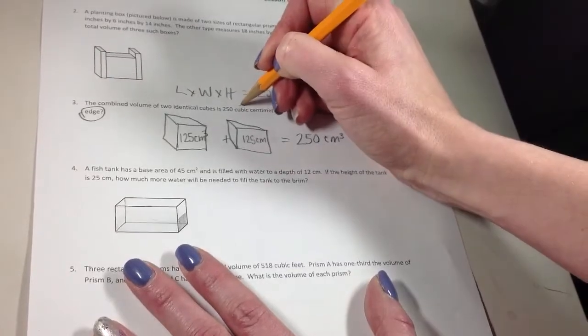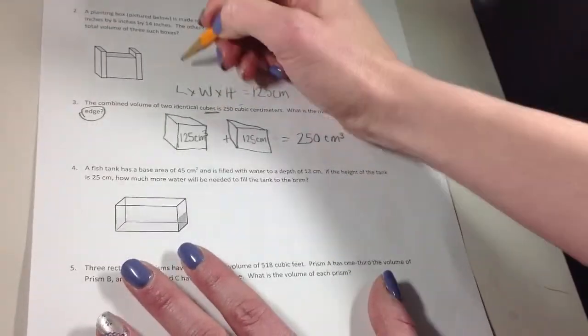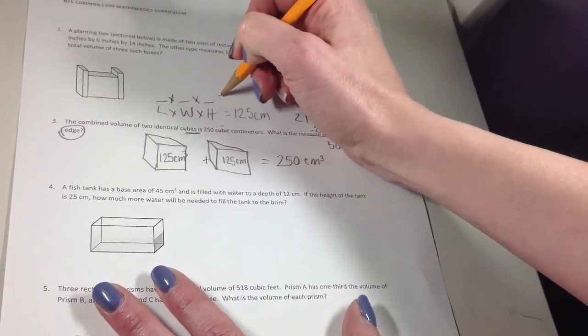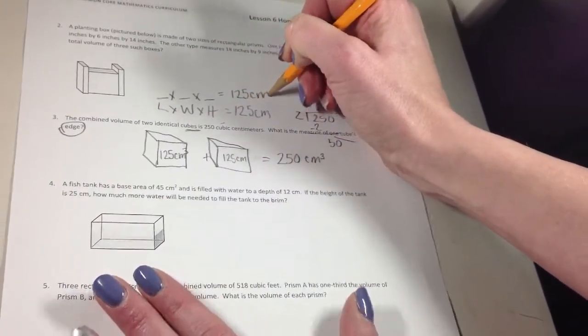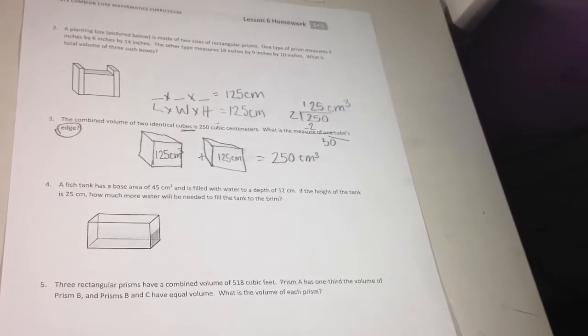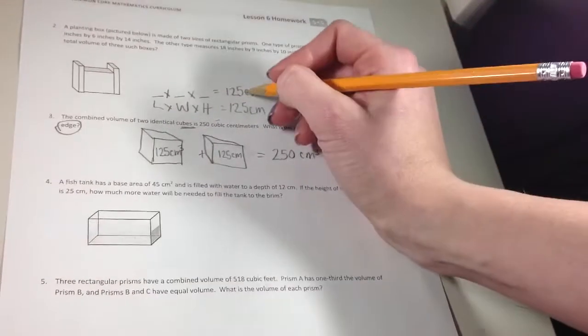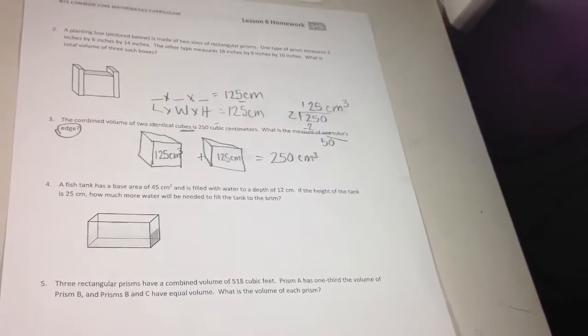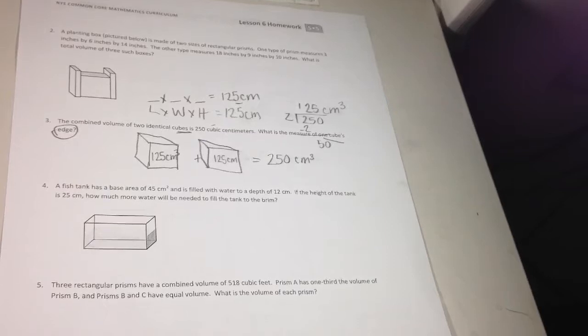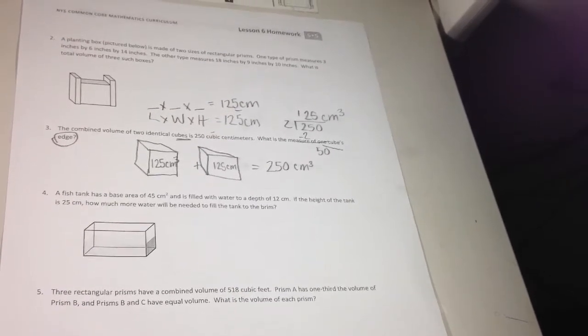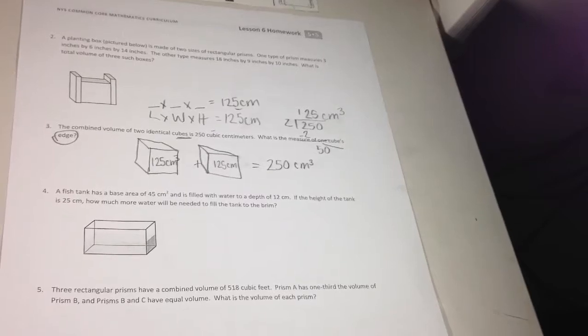So I know you have length times width times height, and that's giving me 125 centimeters. I know because it's a cube, I know each of these has to be the same measurement. So it's the same number. And it's got to multiply to get to 125. So I'm thinking of numbers that I can multiply that will give me a 5 in the 1 spot. And if I count by 3s, I can see, okay, 3 times 3 is 9, okay, times another 3 is 27. I'm not really getting 5s.